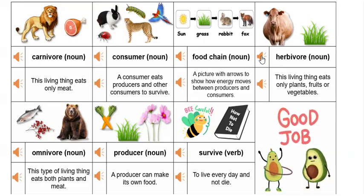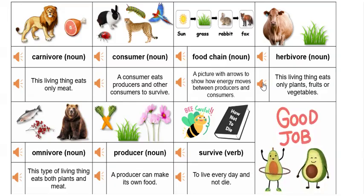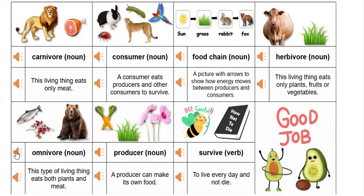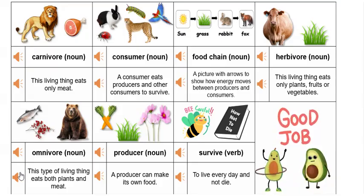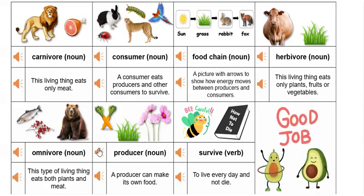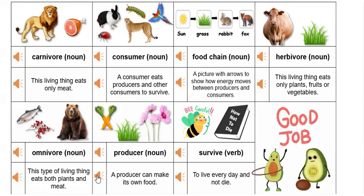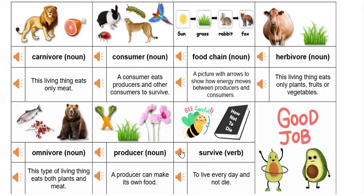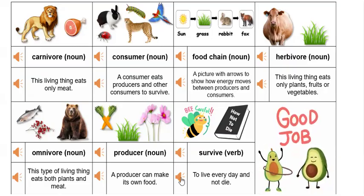Herbivore: this living thing eats only plants, fruits, or vegetables. Omnivore: this type of living thing eats both plants and meat. Producer: a producer can make its own food. Survive: to live every day and not die.